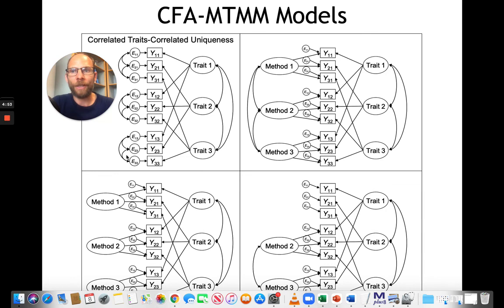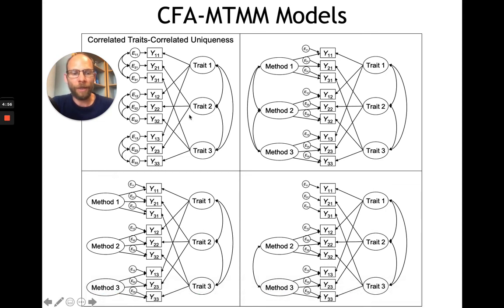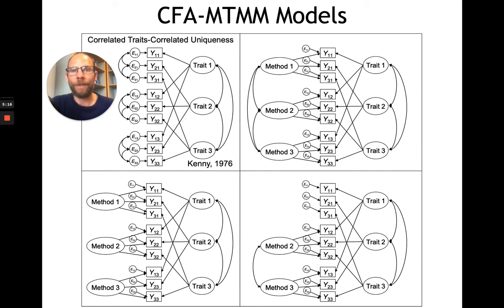That is why this model is called the correlated traits correlated uniqueness model. It was proposed by David Kenny in 1976 and has since been used and studied a lot. This model is useful and an elegant way to account for method effects by simply letting those error variables be correlated, so we don't have to worry about the dimensionality of method effects. However, this model also has certain disadvantages, because there are many error correlation parameters, especially as the design becomes larger.